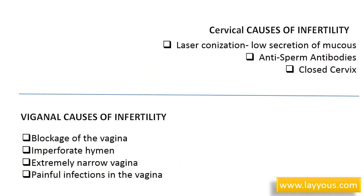Vaginal causes of infertility in women include blockage of the vagina, which will interfere with the entrance of the male organs, such as in imperforate hymen, extremely narrow vagina, or painful infections in the vagina.